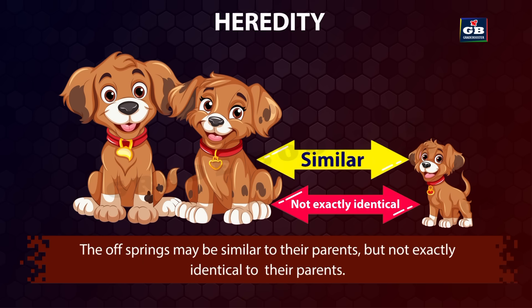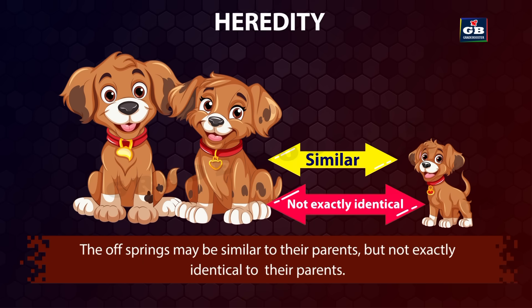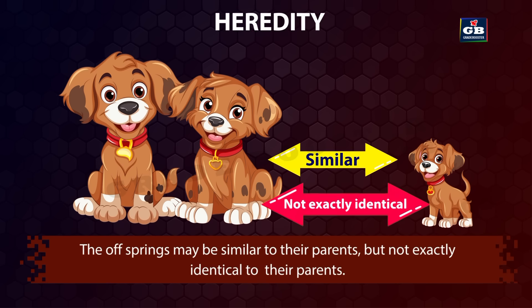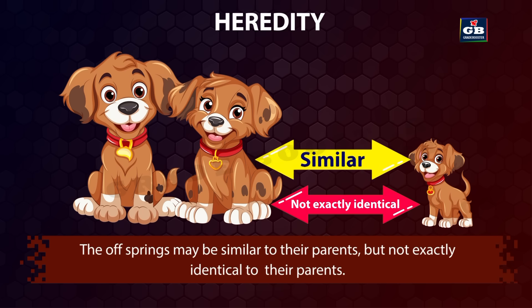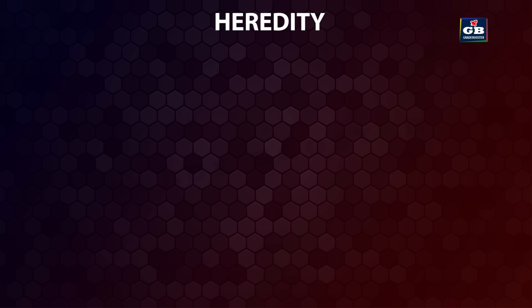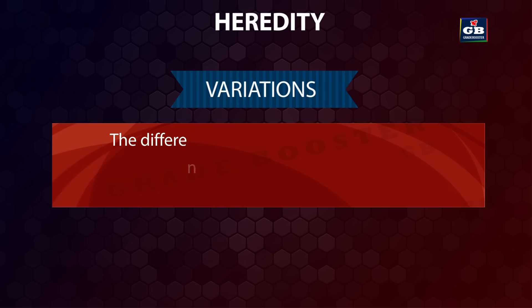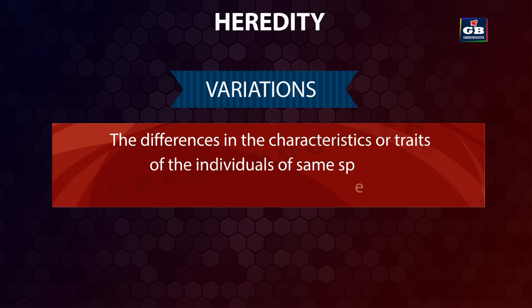The offspring may be similar to their parents but not exactly identical. There are certain differences among parents and offspring — these differences are called variations. The differences in the characteristics or traits of individuals of the same species are called variations.